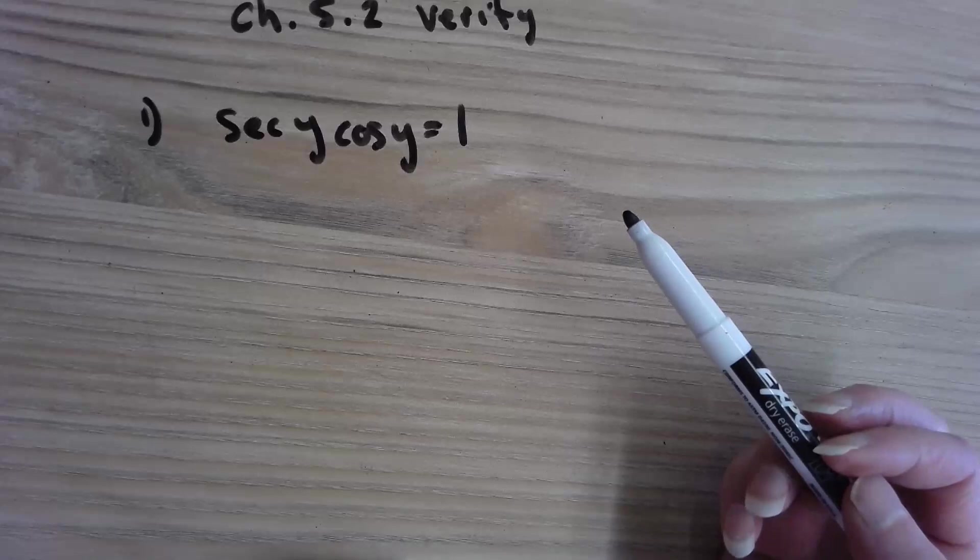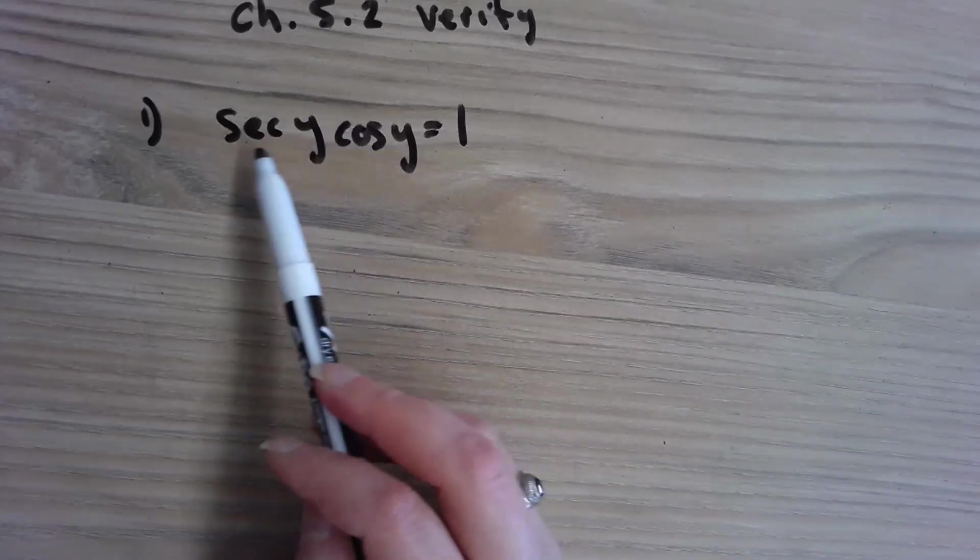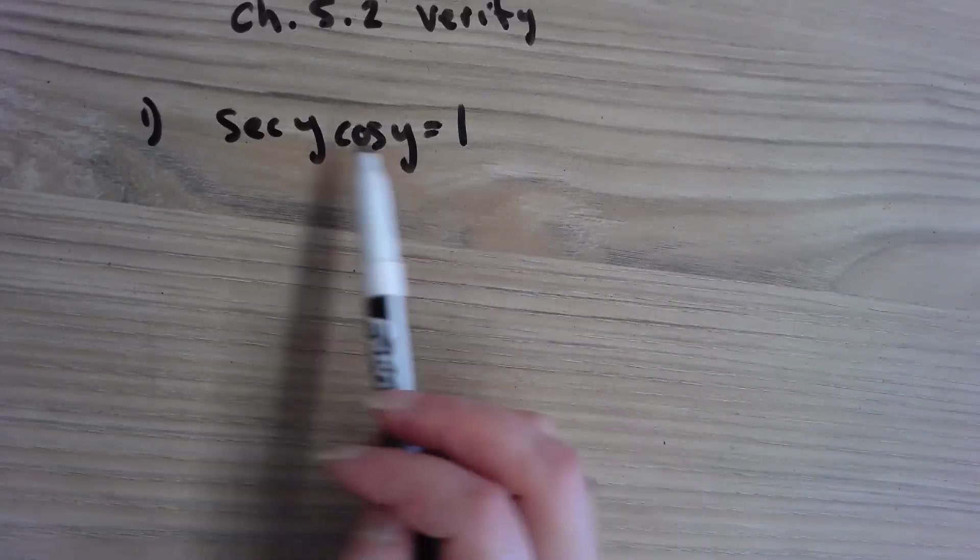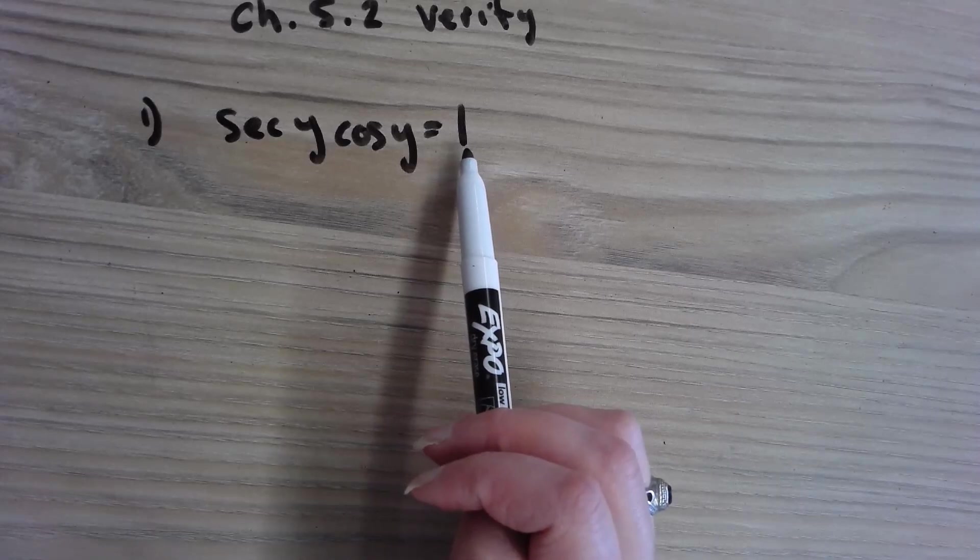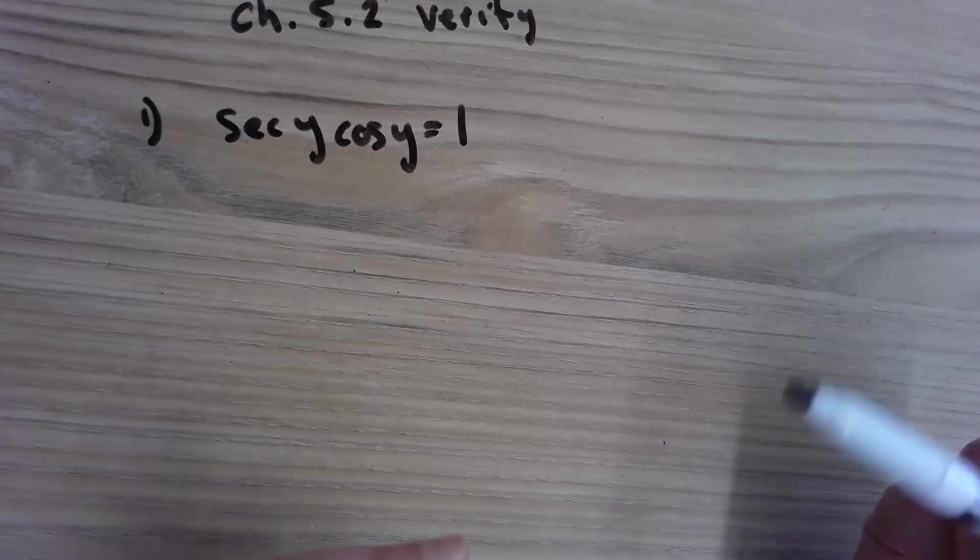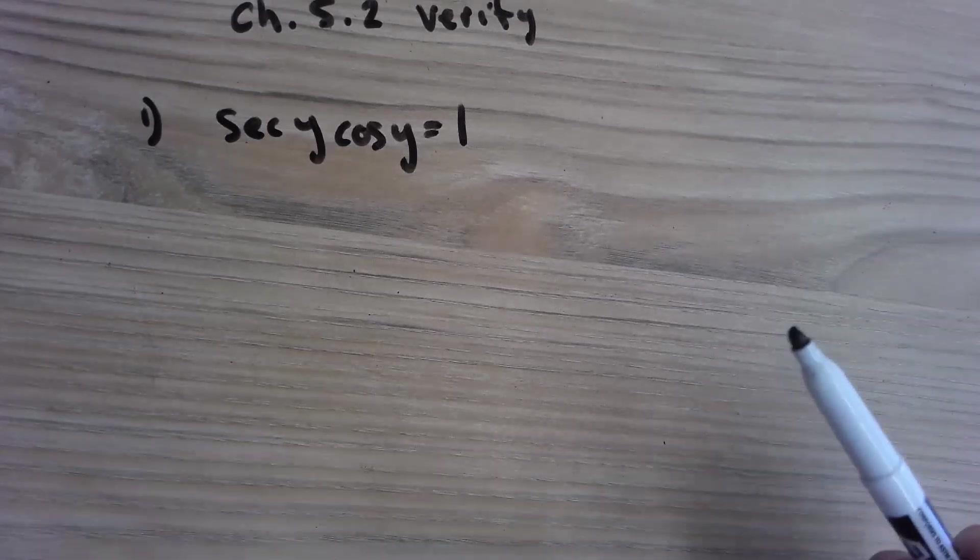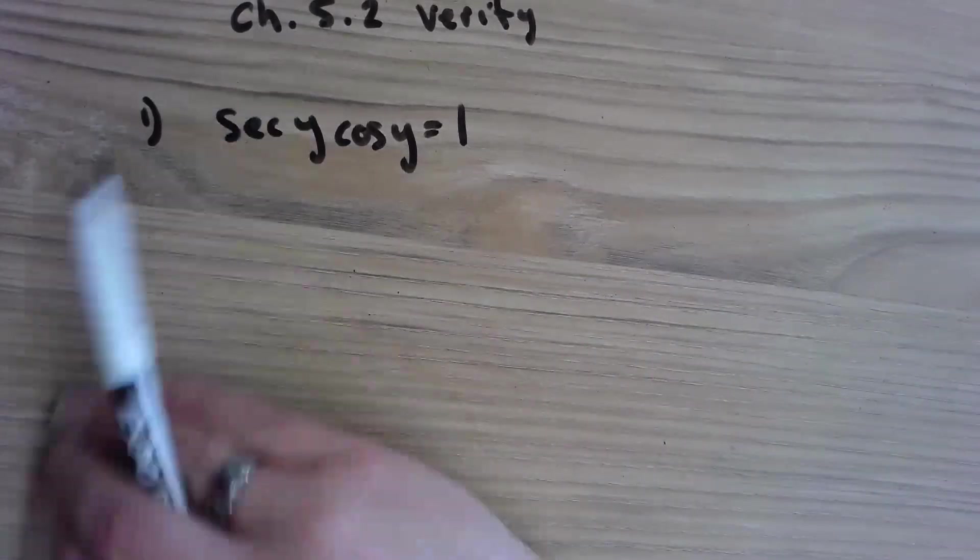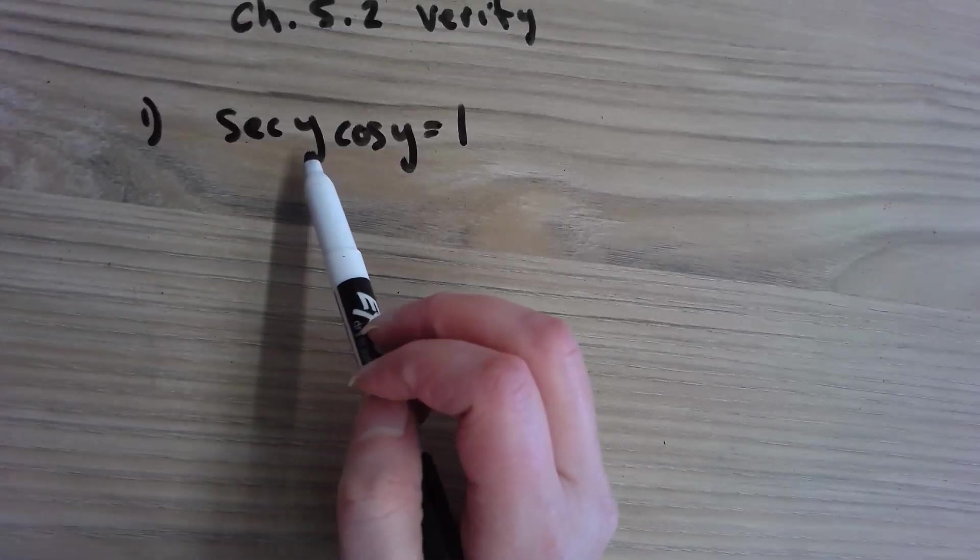In order to verify it, we need to get 1 equals 1. We always go to what the most complicated side is and try to make it not so complicated. Secant we know is 1 over cosine y.